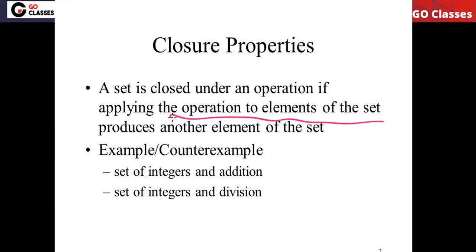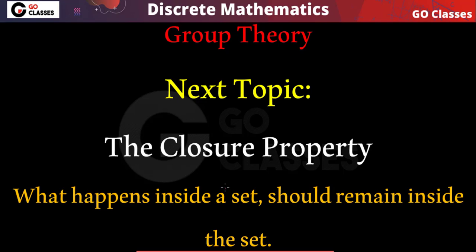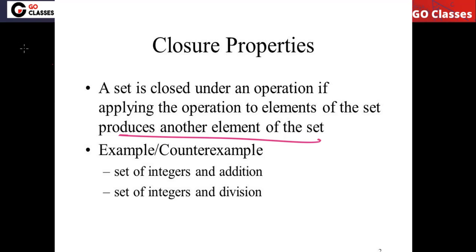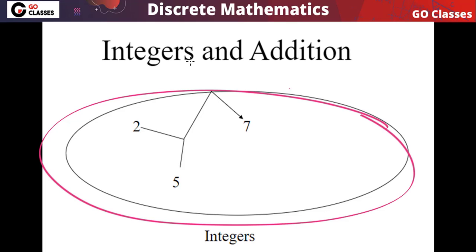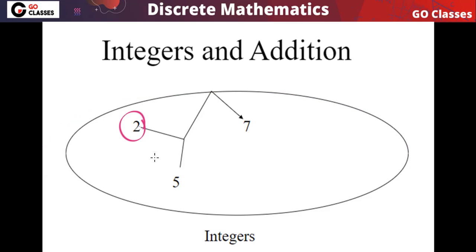If you take any elements of this set and apply the operation, the result should be in this set. For example, the set of integers under addition is closed. The set of integers under division is not closed. If you take any two integers and do their addition, the result will also be an integer.